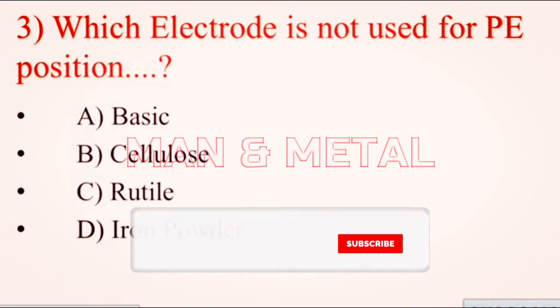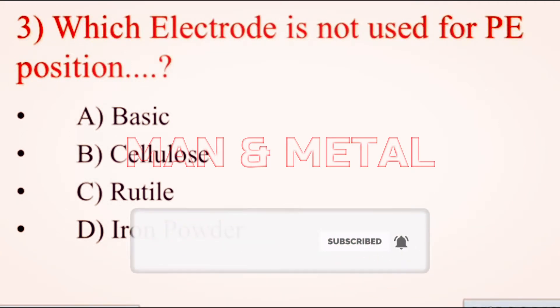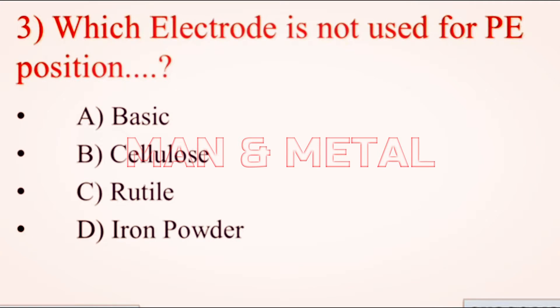Question 3: Which electrode is not used for positional welding? a) basic, b) cellulose, c) rutile, d) iron powder.